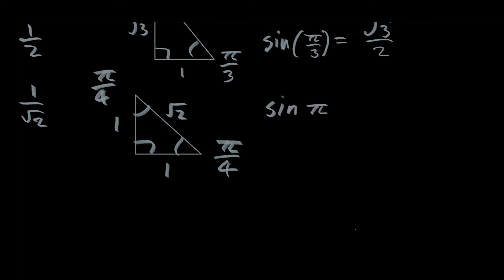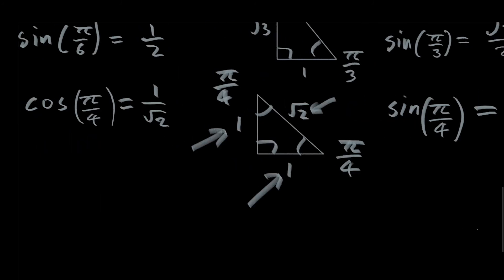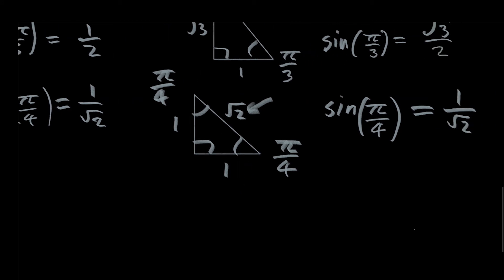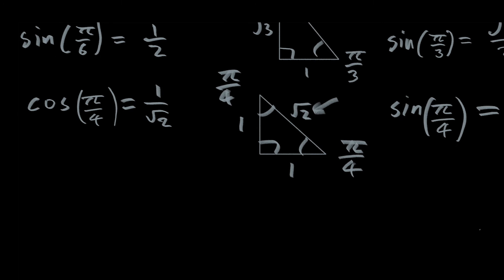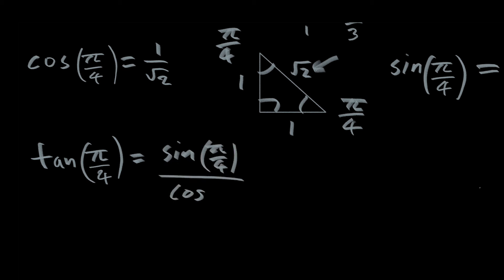The sine of pi over four is opposite over hypotenuse — and since both non-right angles are pi over four, both non-hypotenuse sides have length one. So the sine of pi over four is also one over root two, the same as the cosine of pi over four. This is why the tangent of pi over four equals one: tangent of pi over four is sine over cosine, which is one over root two divided by one over root two, which is just one.